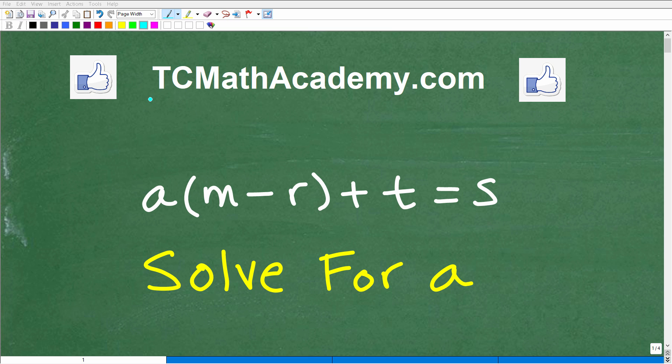Hello, this is John from TC Math Academy, and what we want to do in this particular video is look at how we can solve for a specific variable when we have multiple variables going on in an equation. So this equation here could be a formula. If you're working with formulas in math and science, you're going to have to be able to rearrange those formulas or equations in terms of a specific variable.